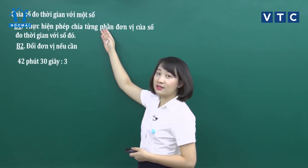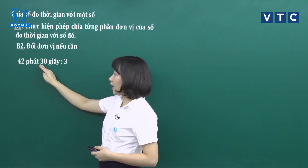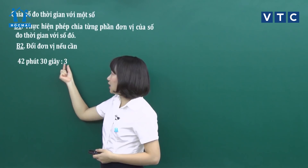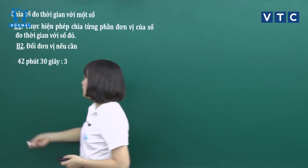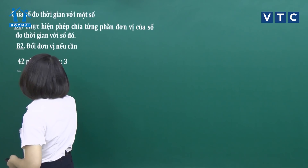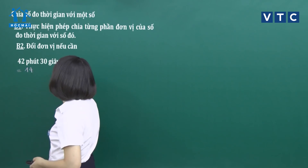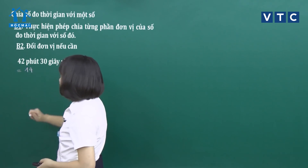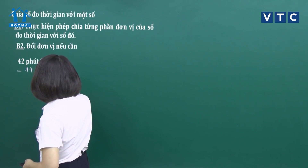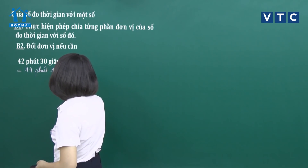Ở bước 1: chúng ta lấy từng phần — phần phút và phần giây — chia cho 3. Lấy phần phút chia cho 3: 42 chia 3, tức là 4 chia 3 được 1 và 12 chia 3 được 4, vậy 42 chia 3 được 14 phút. Còn 30 chia 3 thì được 10 giây. Với phép tính này chúng ta không cần phải đổi đơn vị nữa.